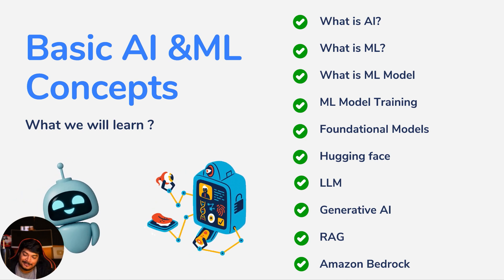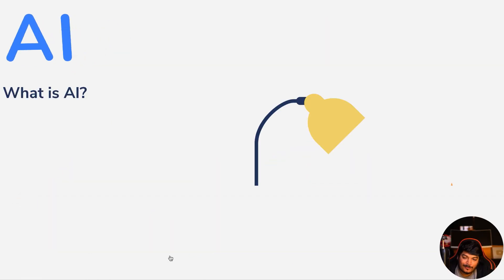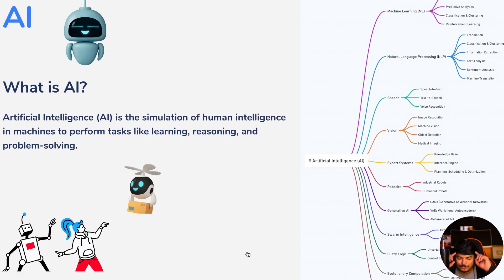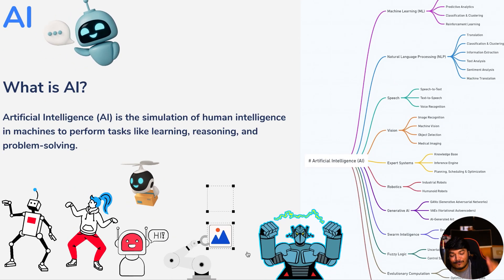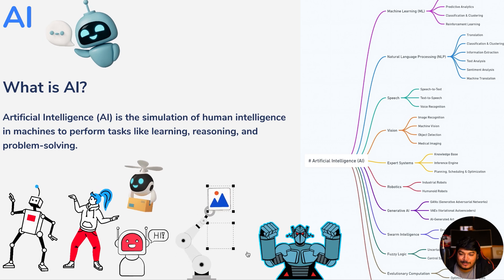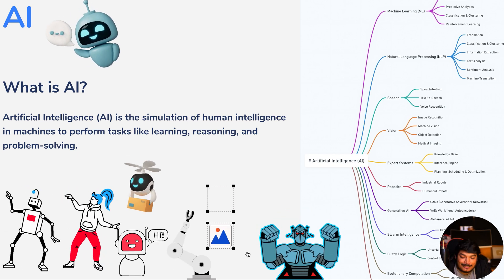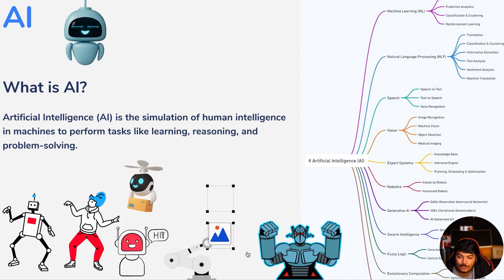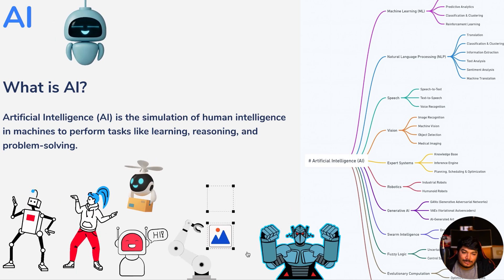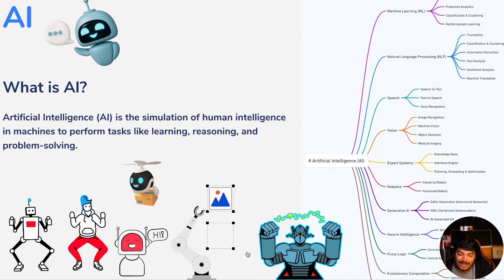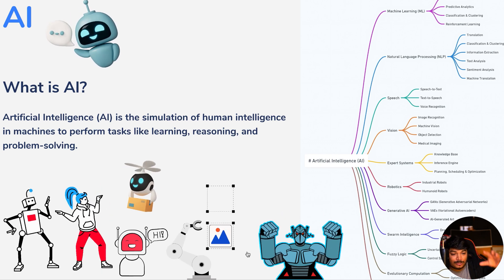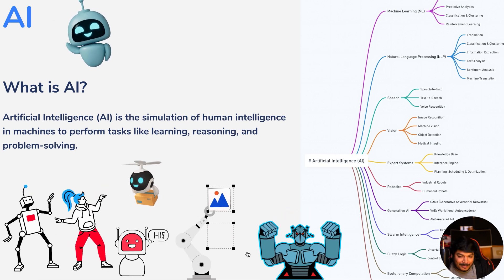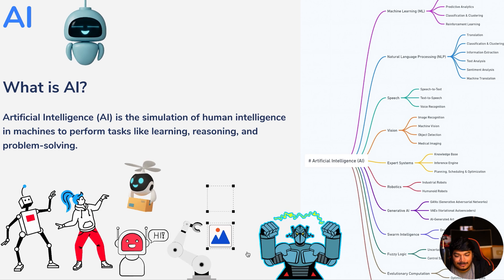So the very first topic: what exactly is AI? Now if anybody asks you about AI, maybe during an interview or as a general question, let's go with the definition first. AI or artificial intelligence is the simulation of human intelligence in machines to perform tasks like learning, reasoning, and problem solving. You can imagine machines greeting you, machines delivering your package from one address to another, machines doing organization, or a robot doing cleaning work or cooking your food.